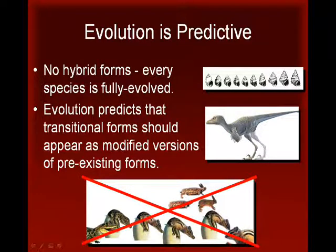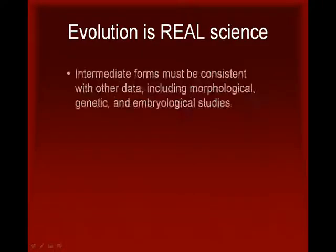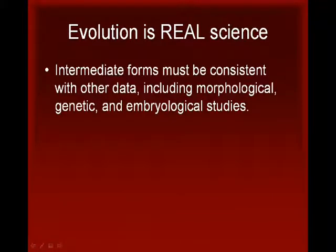Evolution is a powerful theory because it does not merely predict that there will be intermediate forms — it also allows us to predict which intermediate forms should be found, and when these forms should have existed. These predictions must be consistent with our current knowledge about evolutionary relationships, based on all of the available datasets, including evidence from morphological, genetic, and embryological studies.